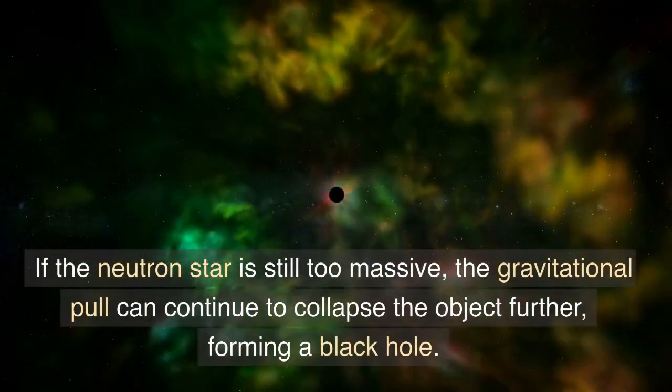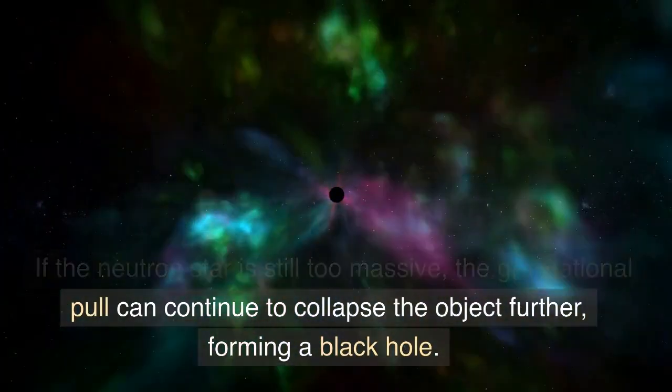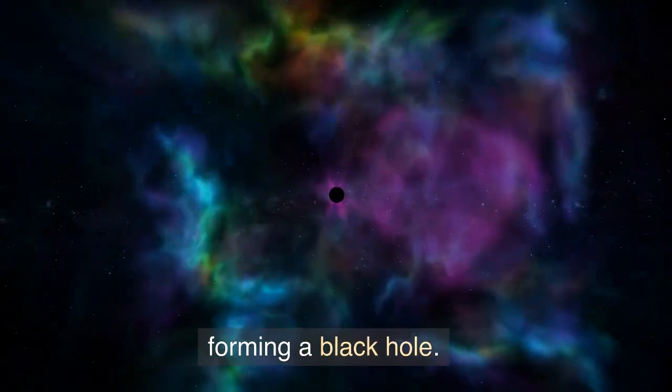If the neutron star is still too massive, the gravitational pull can continue to collapse the object further, forming a black hole.